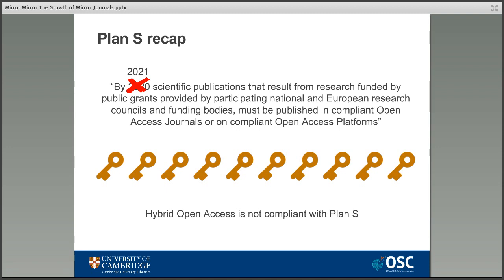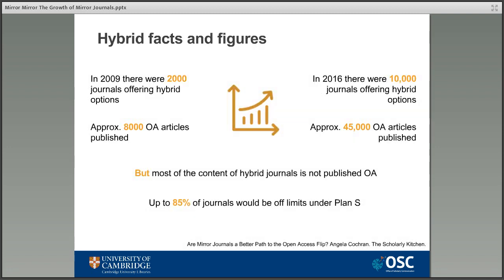This is a major problem for some researchers, as they think it means they will have less choice about where to publish, since the titles they would normally publish in are no longer compliant with funder mandates being hybrid publications. Hybrid journals are meant to be a temporary measure to encourage the flip towards open access — a kind of holding pattern while everything gets sorted out — but most would agree this hasn't happened exactly as planned.